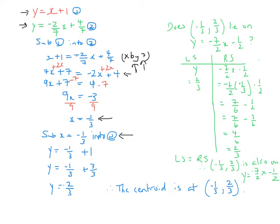Then I substituted x equals negative one-third into the first equation because it's nice and easy, and I ended up with my y being equal to positive two-thirds. So that makes sense in terms of where it looks like the centroid should be based on the graph that we drew.